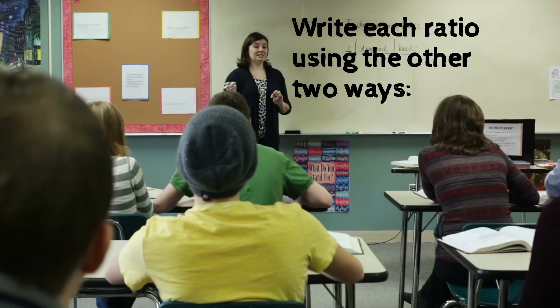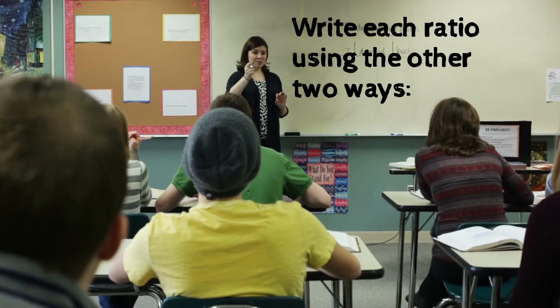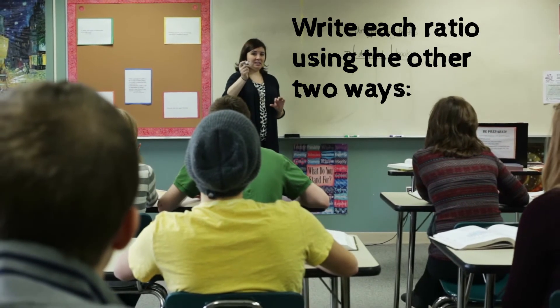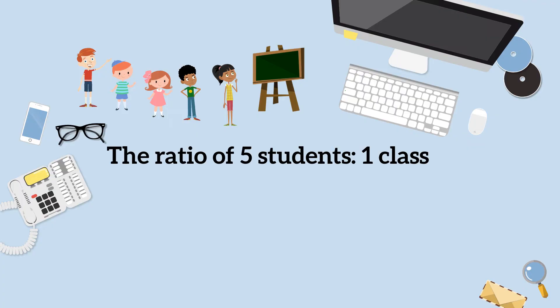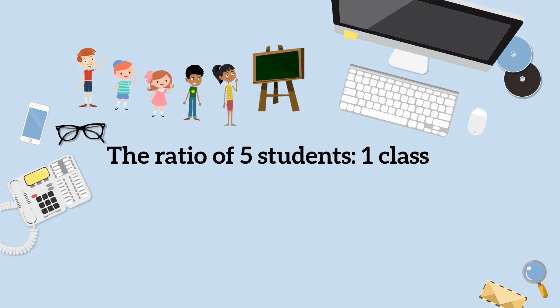Write each ratio using the other two ways. The ratio of 5 students to 1 class, written with a colon.